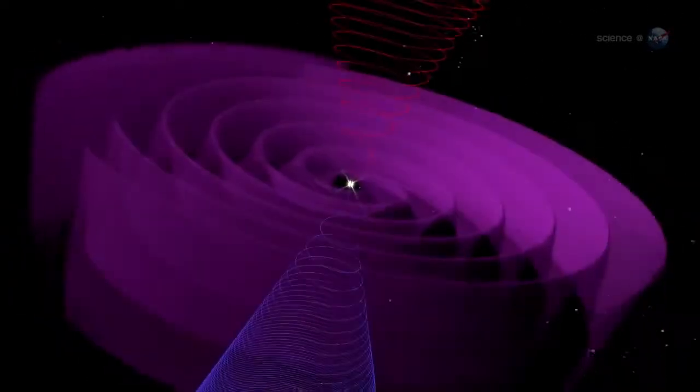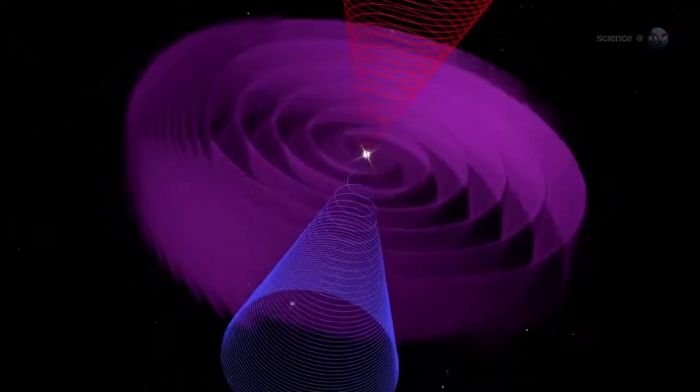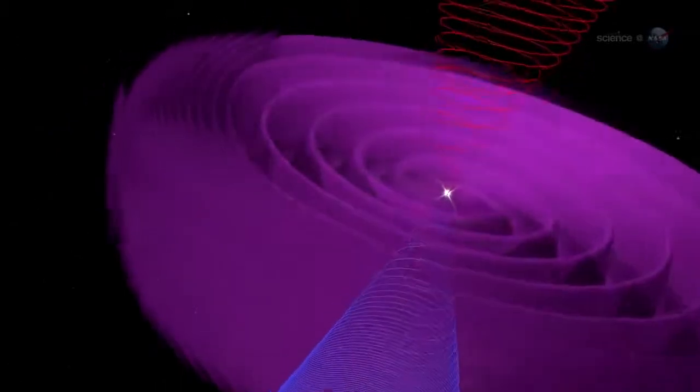The current sheet acts as a barrier to cosmic rays, deflecting them as they attempt to penetrate the inner solar system. A wavy, crinkly sheet acts as a better shield against these energetic particles from deep space.